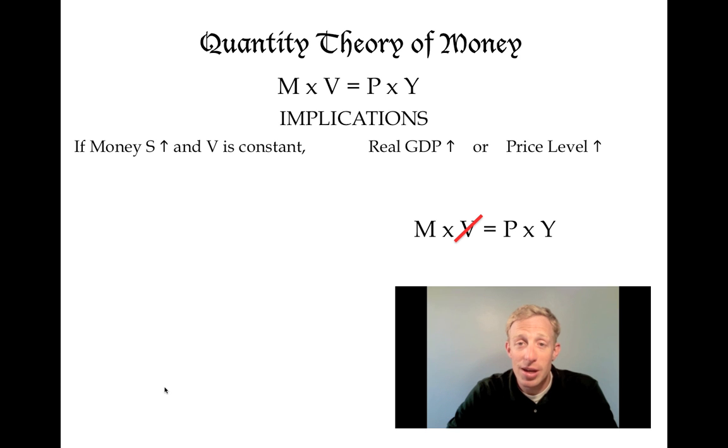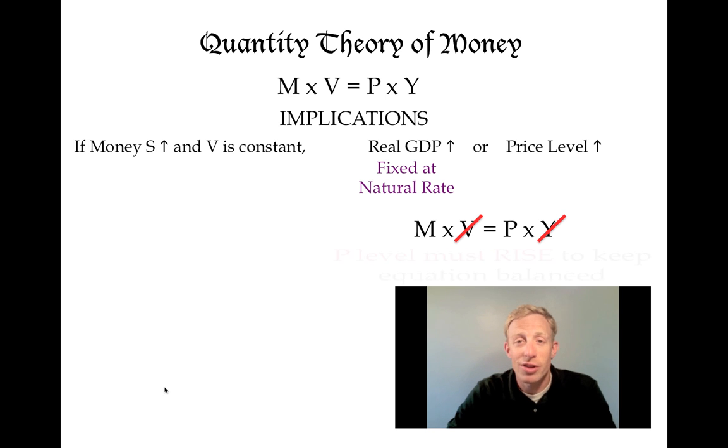Real GDP is considered in this equation to be fixed at the natural rate of output. So the only thing left for an increase in the money supply to change is the price level. If the money supply goes up and velocity and real GDP are essentially constant, then to keep this equation equal, the price level has to go up.